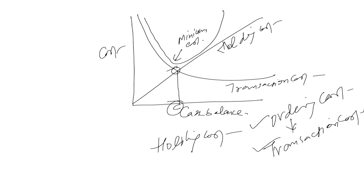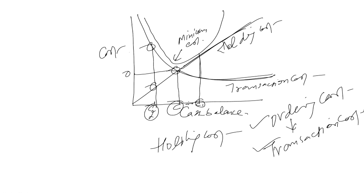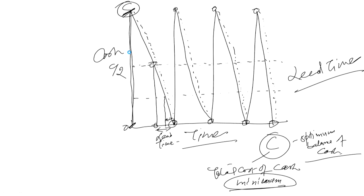When you draw the holding cost curve and the transaction cost curve on the same graph, there is a point of minimum total cost where these two curves intersect — that is the point C. At cash balance C, the total cost is minimum. If you increase cash to C1, your transaction cost falls but holding cost rises. If you decrease it to C2, transaction cost rises but holding cost falls.